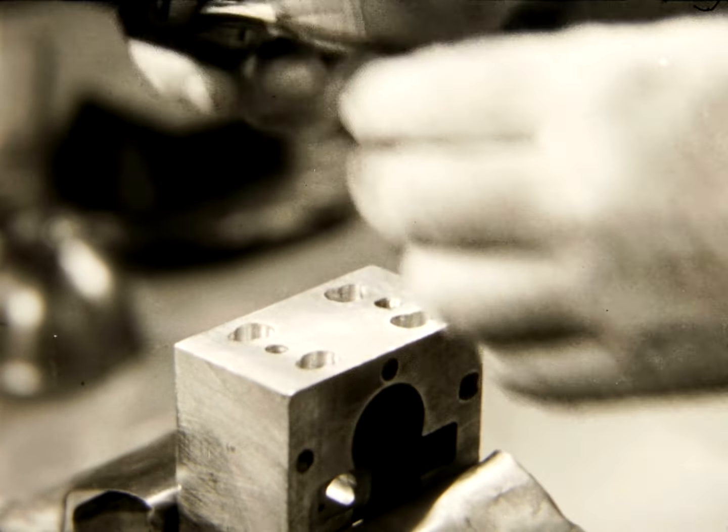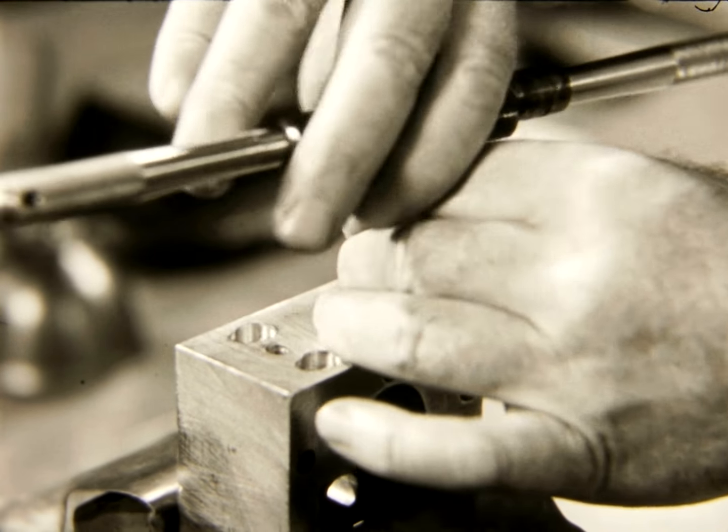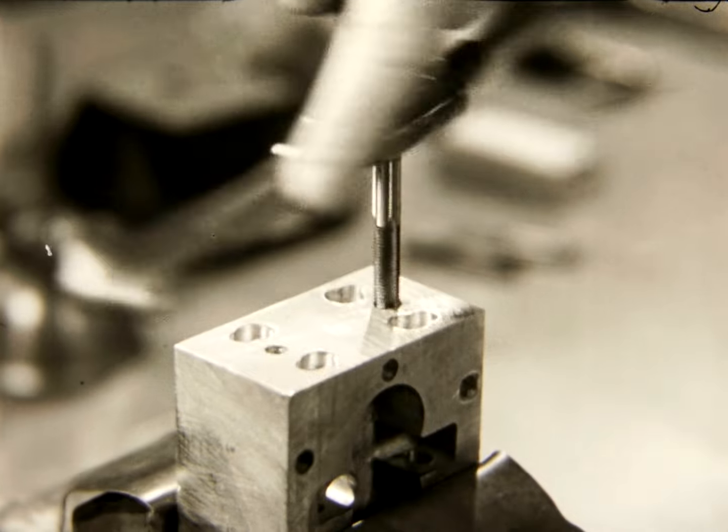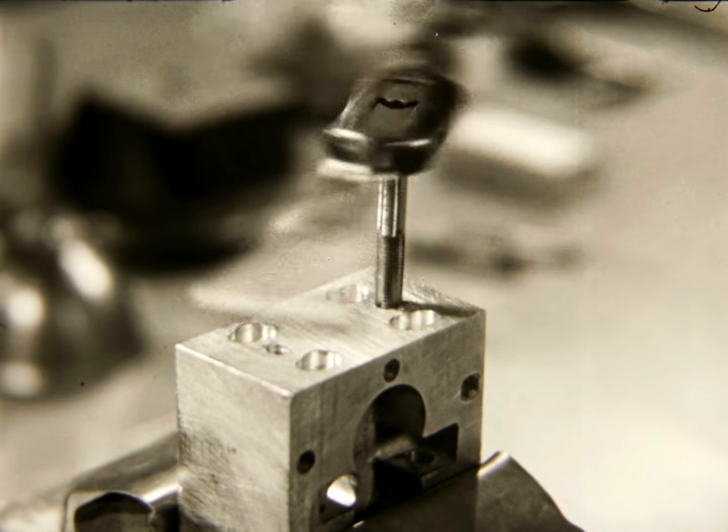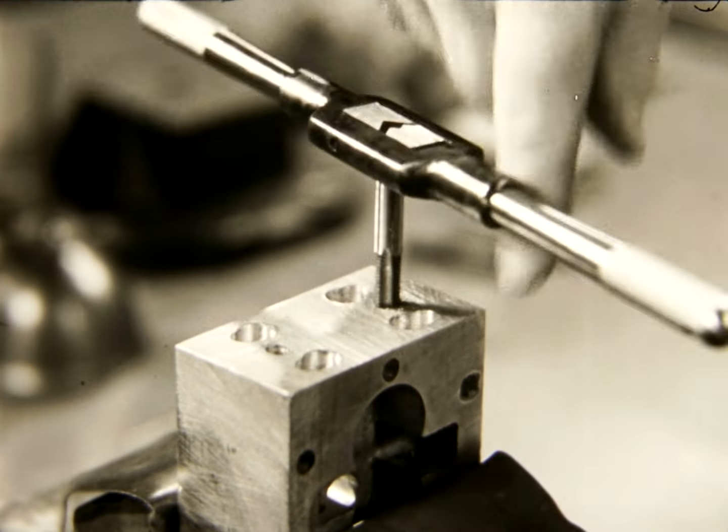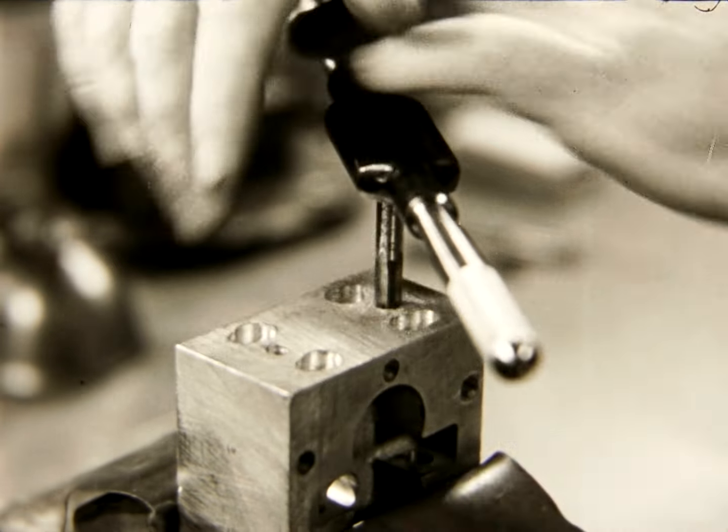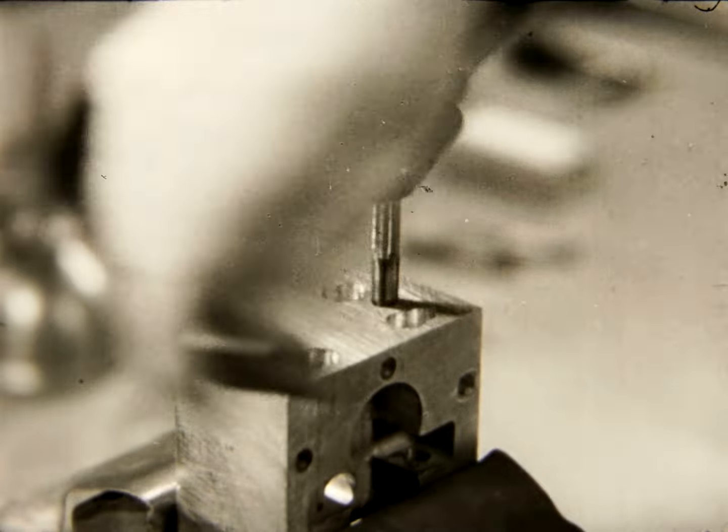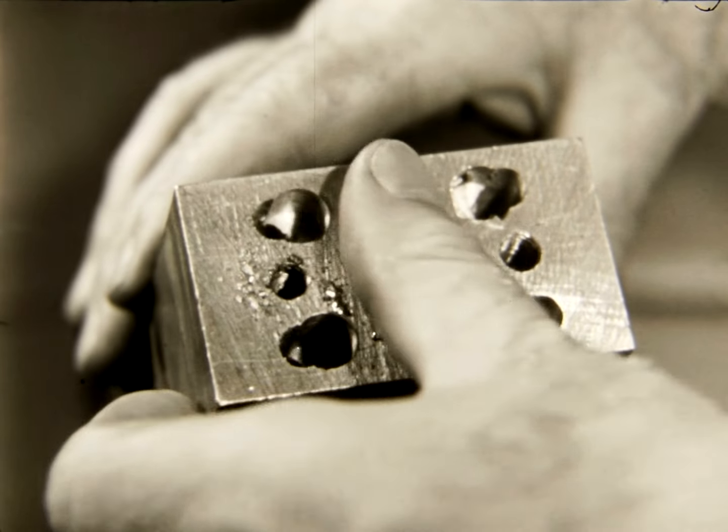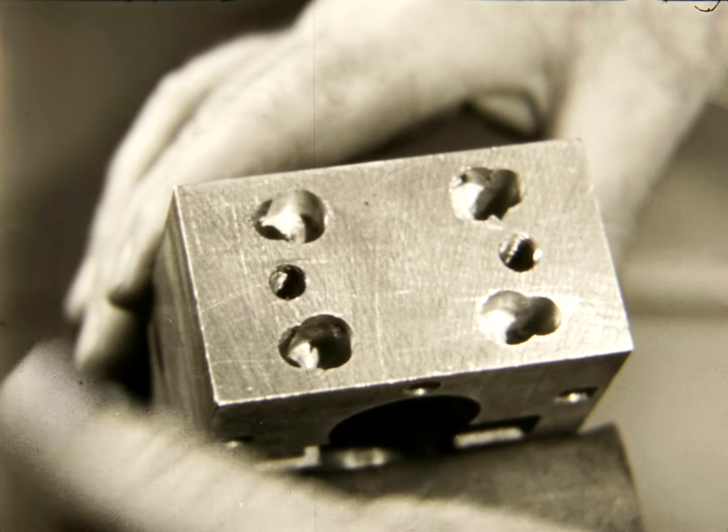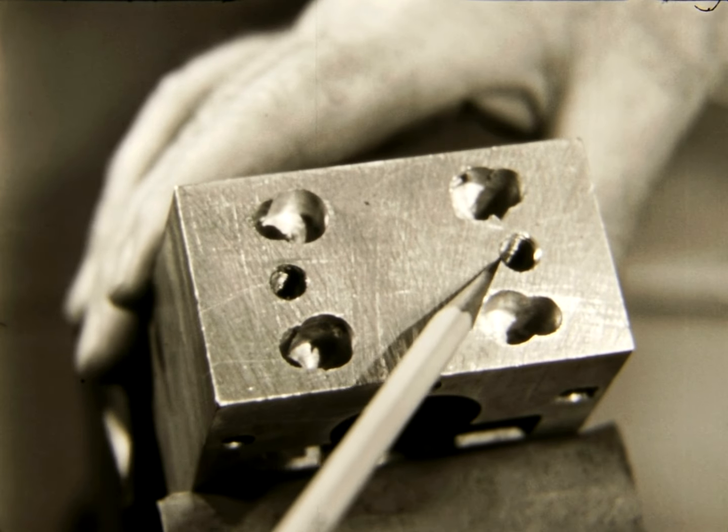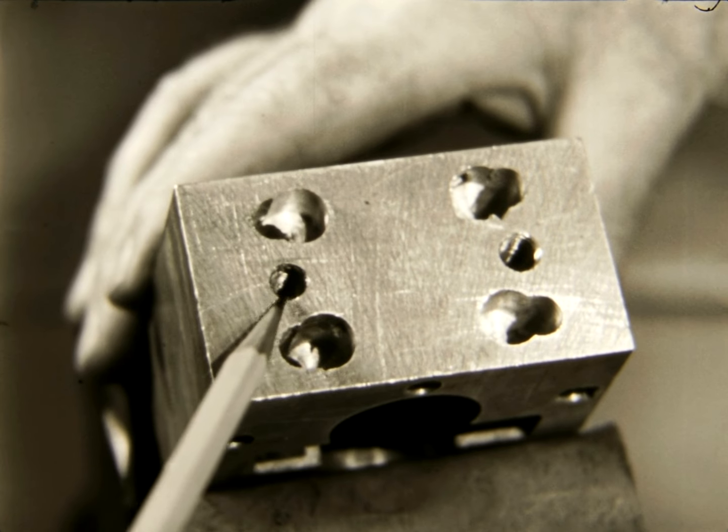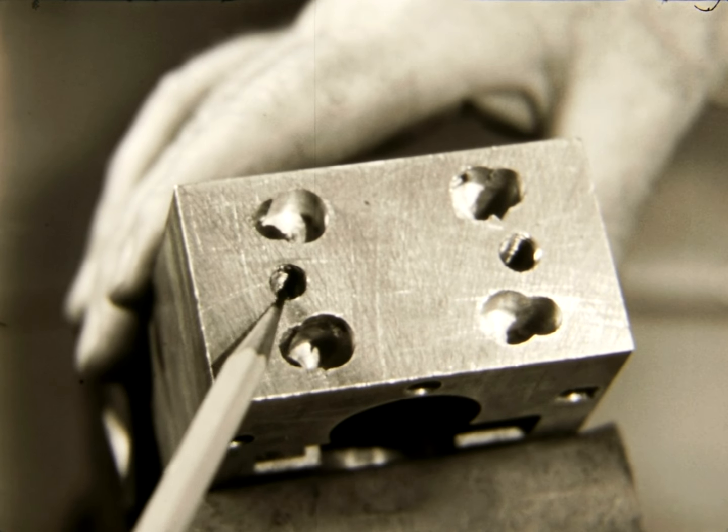The third tap used in the tapping of blind holes is the bottoming tap, which completes the thread to the bottom of the hole. This job is completed. Depth of the thread should be one and a half times the diameter of the bolt to provide a good, strong connection.